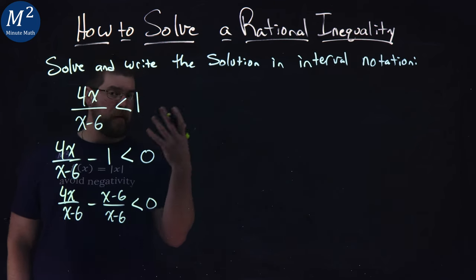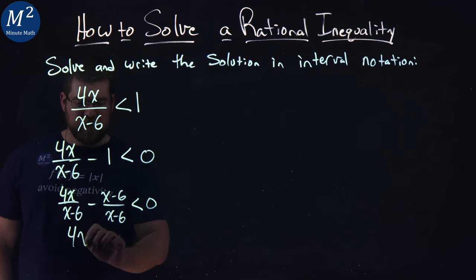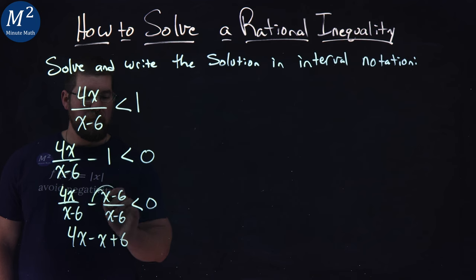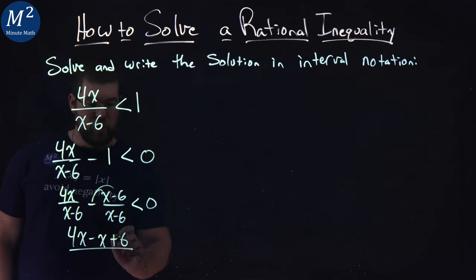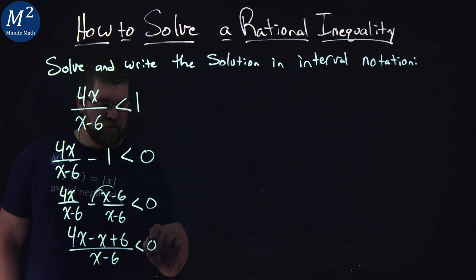From there, we can combine because our denominators are now equal, and we have 4x minus x plus 6. Remember, that minus sign gets distributed to both parts, over x minus 6 is less than 0.